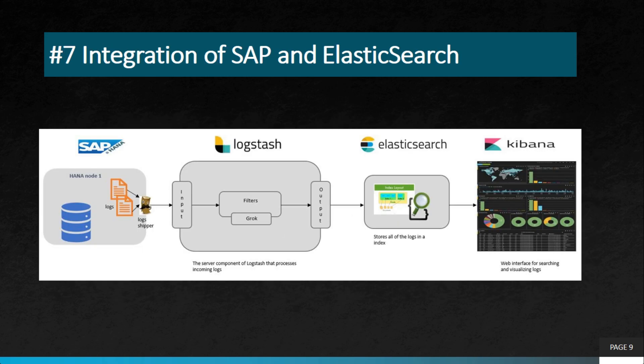Then we have integration of SAP and Elasticsearch. Elasticsearch is an open source search and analytics engine. This integration enables businesses to search, analyze, and visualize data generated by SAP systems using Elasticsearch. A common use case is autocomplete search — when you type 'a', a list of country names starting with 'a' appears, and as you type 'n', the results narrow further. This type of search is what Elasticsearch handles effectively.